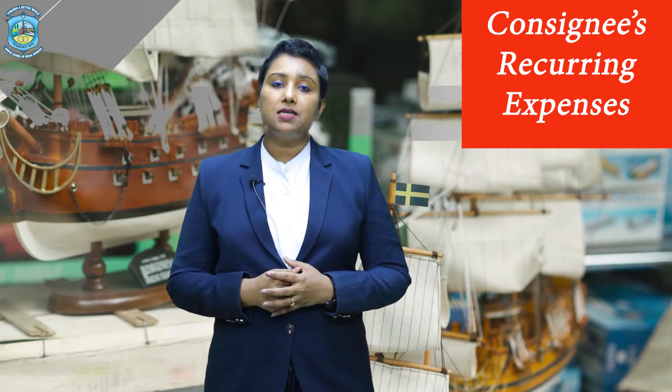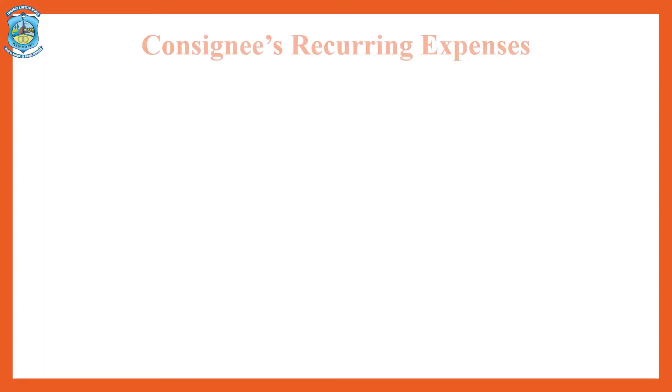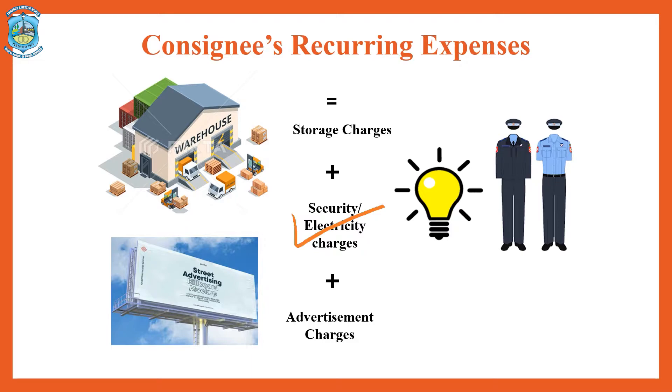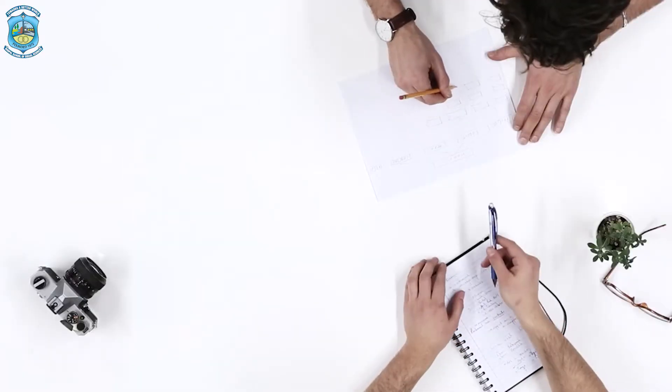There are also recurring expenses on the consignee's side, which are basically related to storing and selling the stock. These could include storage rent, electricity expenses, security expenses, and advertisement and sales promotion expenses. One very important expense related to the consignee is his own commission, which has to be calculated carefully depending on the agreement between the consignor and the consignee. Let us understand the types of commission.